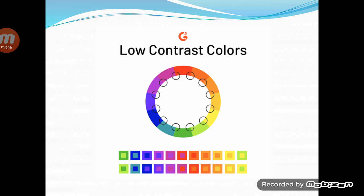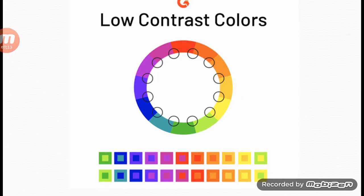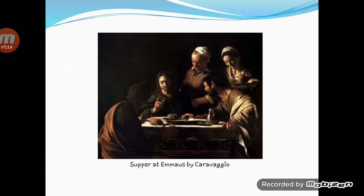Tenebrism — from the Italian — also called dramatic illumination, is a style of painting using very pronounced chiaroscuro, where there are violent contrasts of light and dark, and where darkness becomes a dominating feature of the image. The technique was developed to add drama to an image through a spotlight effect and was popular during the Baroque period of painting.